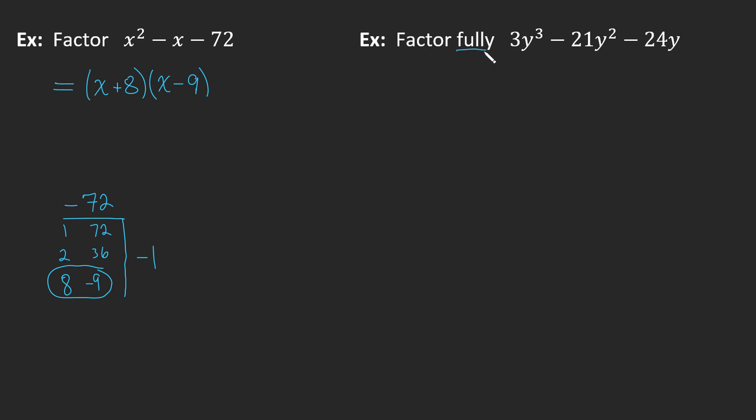And our final example here, we've been asked to factor fully this algebraic expression. And whenever you're asked to factor fully, that's a huge hint. It's a hint that there's going to be multiple steps. As with any factoring question, you should really look for a GCF first. And I see a GCF among these three terms. The GCF is 3y. So I will factor out a 3y from each of these terms. And I'll be left with y² - 7y - 8. And what that leaves me with inside the bracket here is a monic trinomial, which means I really should try and factor that monic trinomial inside this bracket. And it's a huge hint that they said factor fully. So we're going to look for two numbers that multiply to make -8 and they add to make -7.